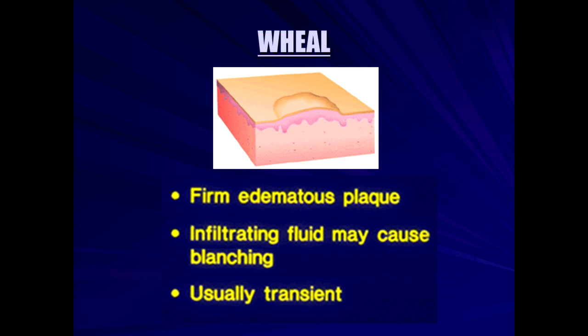Wheals are firm, swollen, edematous plaques — spongiosis under the microscope, where there is fluid accumulation and intracellular edema — and you see these wheals. There's infiltrated fluid that may cause blanching, usually transient. Wheals are characterized by this urticarial-like appearance, a classic finding in hives.